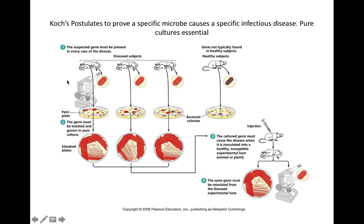Koch's postulates help you prove that microbe X causes disease X. Notice how important pure culture is throughout these four steps. In step one, your suspect pathogen X has to be present in every case of the infectious disease X. In step two, the suspect pathogen has to be grown in pure culture — this is where our agar plates come in. An isolated colony is a pure culture because all the cells in an isolated colony are descendants of a single cell, making them genetic clones.